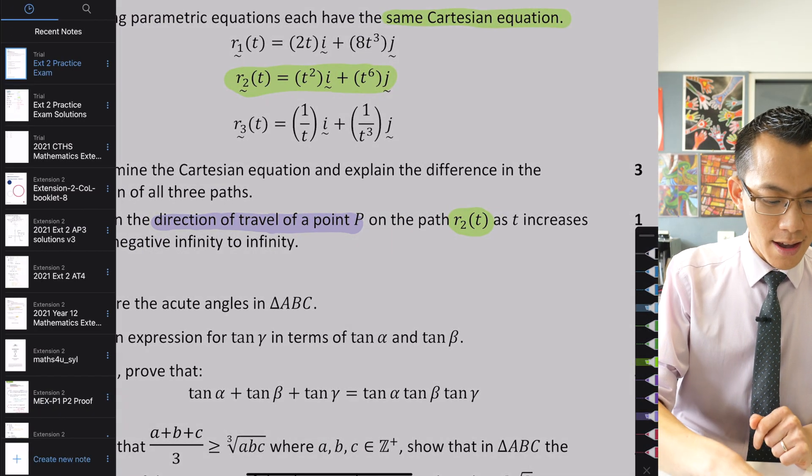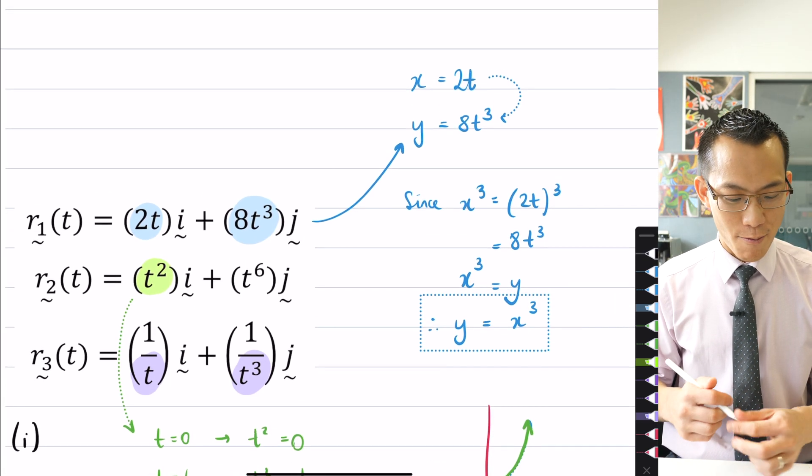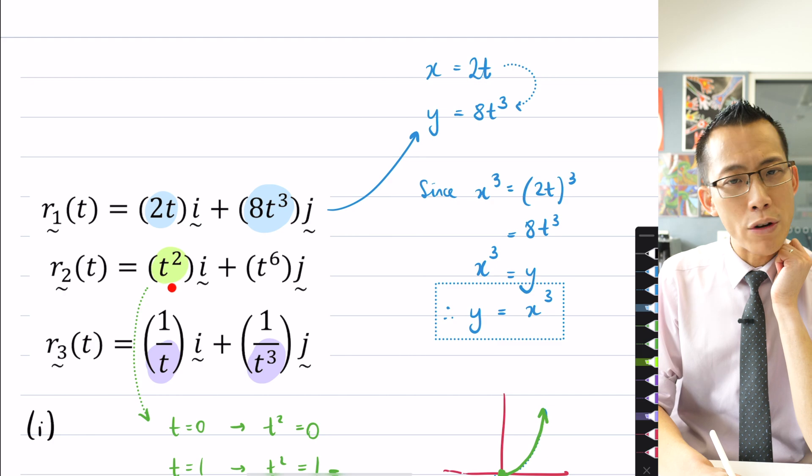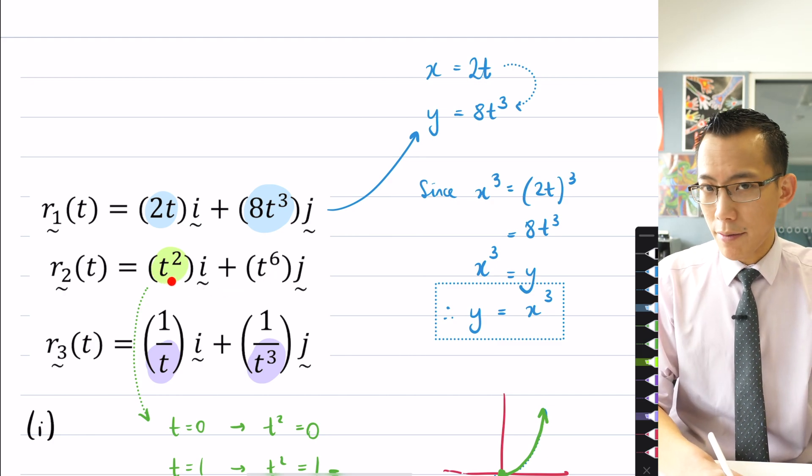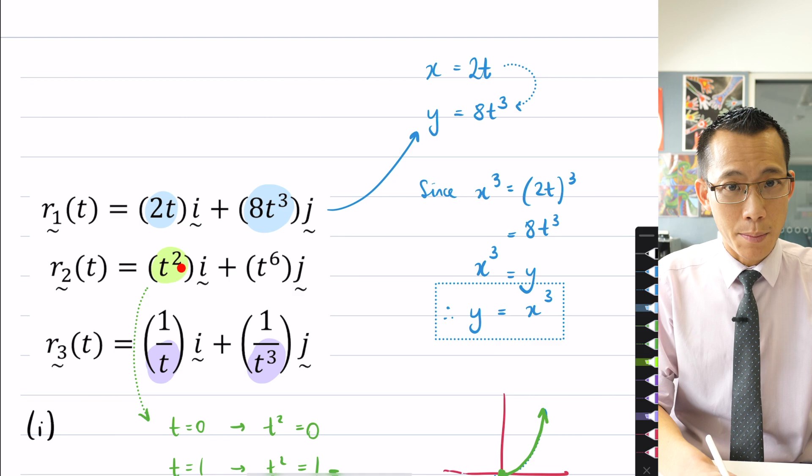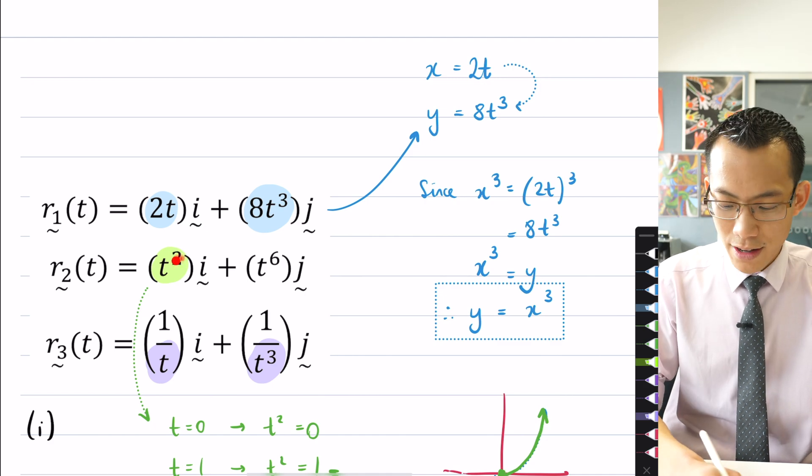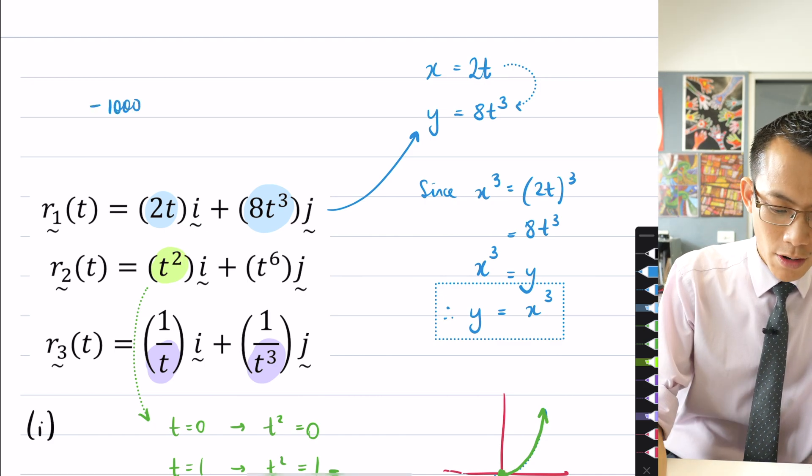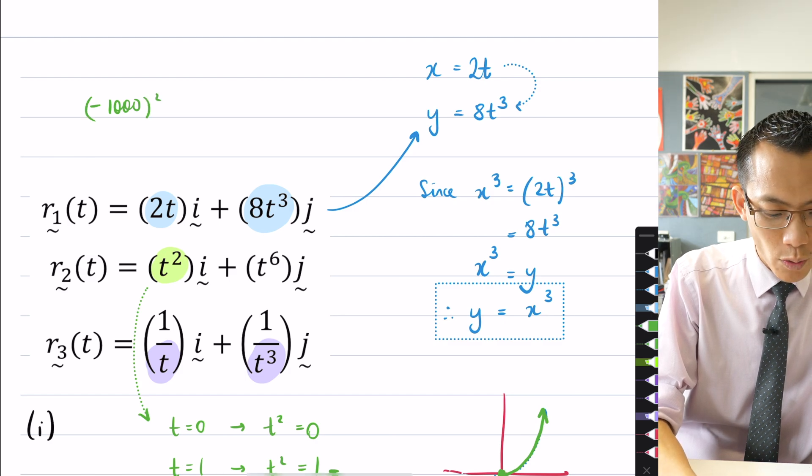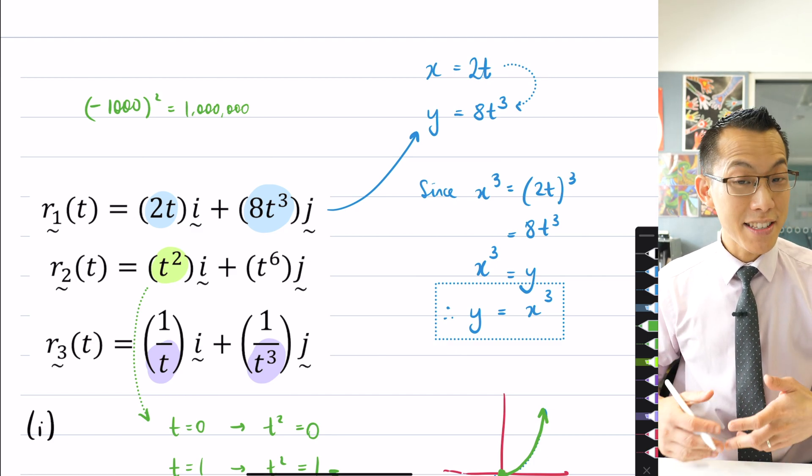Let's think algebraically about what's going on here. As t increases from negative infinity to infinity, what's going on? When you put in some really large negative number into here, you square it, so your x value is going to become, even though it's negative, the sign disappears, it just becomes positive, and you're going to have some very large x value. Some negative large value, like say, negative a thousand. When you square it, you get positive a million. And then, of course, when you raise it to the power of six, it's even larger.